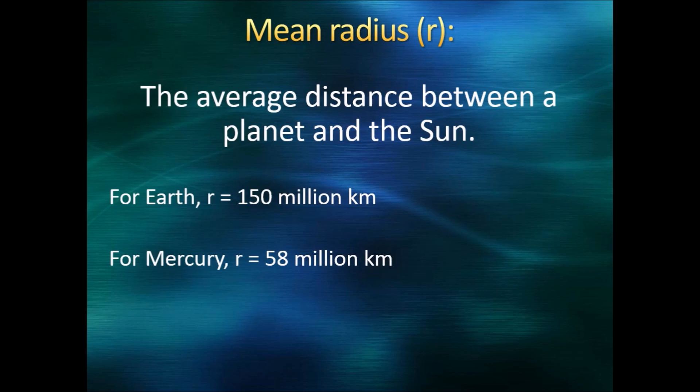The cube of the mean radius is r cubed. Mean radius is the average distance between a planet and the sun. For the Earth, that is 150 million kilometers. For Mercury, it is a mere 58 million kilometers. R cubed means that we take that number and cube it, or multiply it by itself, twice.